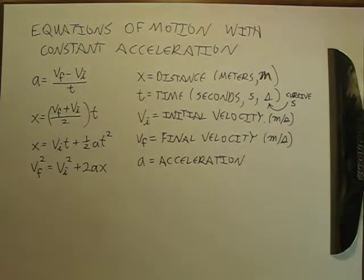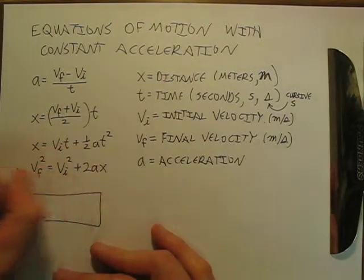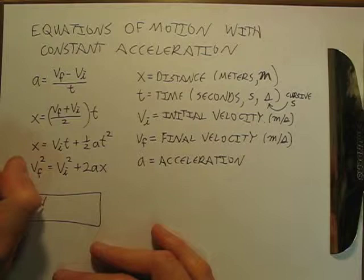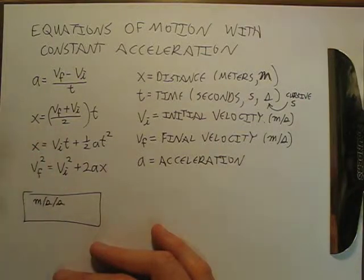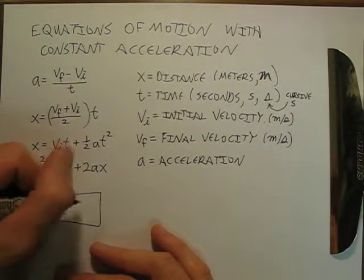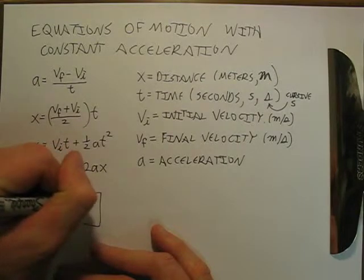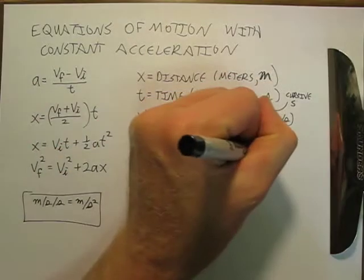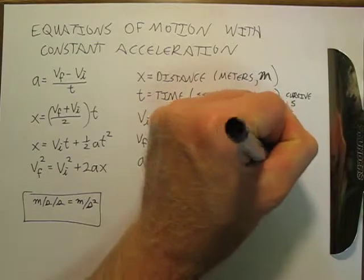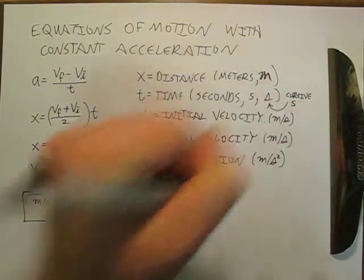Well, it's going to be meters per second per second. So down here, I'm just going to say meters per second per second. But we can write that simpler as meters over seconds squared. So the units of acceleration are going to be meters over seconds squared.